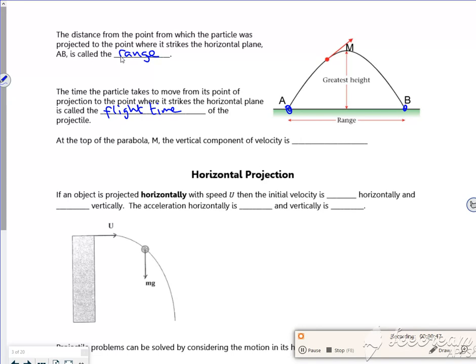So the top of it here is almost like a stationary point, it stops going up. So its vertical component of velocity is zero and we use that quite a lot.